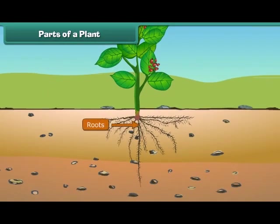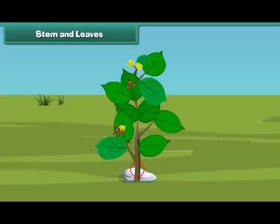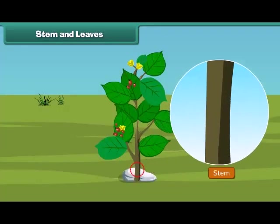Roots are the lower part of a plant. They grow in soil and help the plant to get water and minerals from the soil. The next part of a plant is the stem. A stem is the hard part of the plant which grows above the ground. It bears leaves, fruits, and flowers, and also supports the plant.